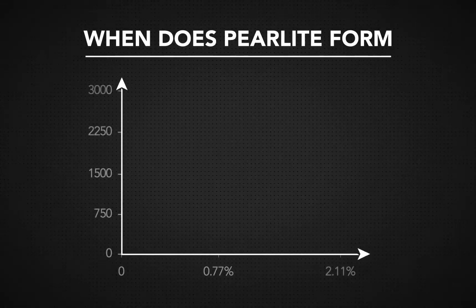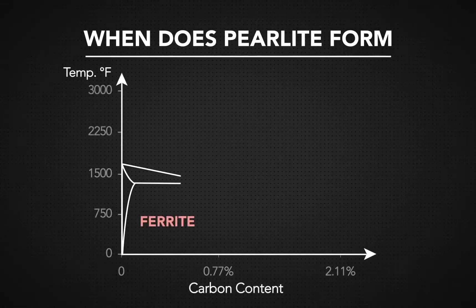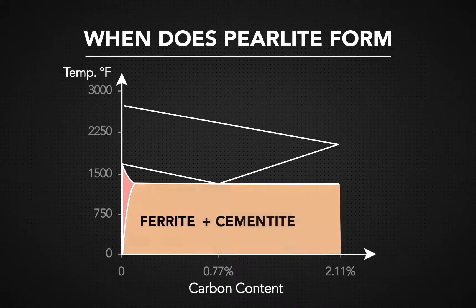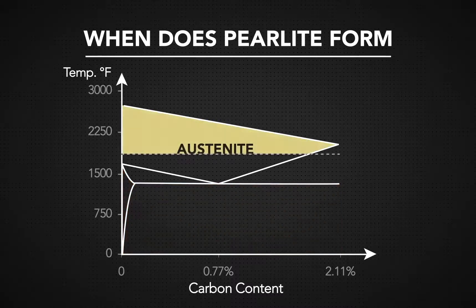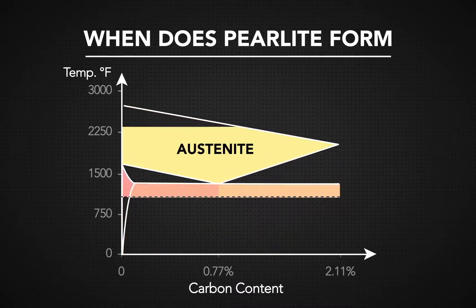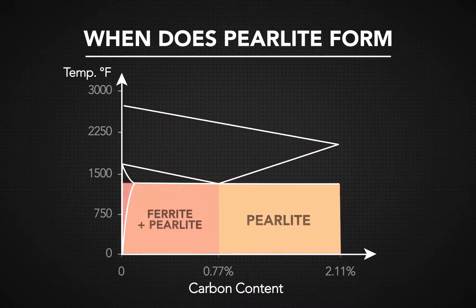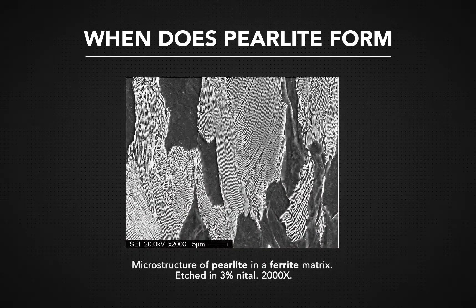At room temperature, steel contains both ferrite and cementite. As steel cools from the austenite to the cementite phase, part of the ferrite and cementite turns into perlite. Perlite has equal rows of ferrite and cementite.